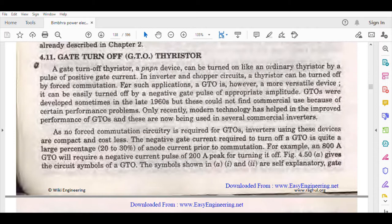In inverter and chopper circuits, a thyristor can be turned off by forced commutation. We have read about commutation and force commutation categories. For such applications, a GTO is however a more versatile device. It can be turned off by a negative gate pulse of appropriate amplitude.